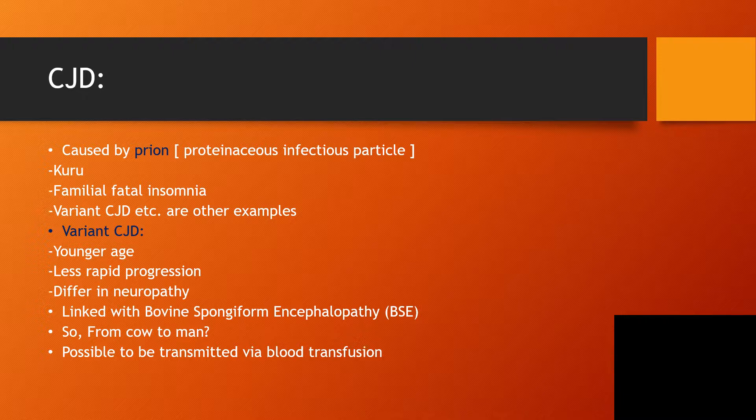When it is variant Creutzfeldt-Jakob disease, it occurs in a younger age group and it is less rapid. However, in neuropathology it is linked with bovine spongiform encephalopathy — transmission from cow to man — and it is also possible to be transmitted via blood transfusion.